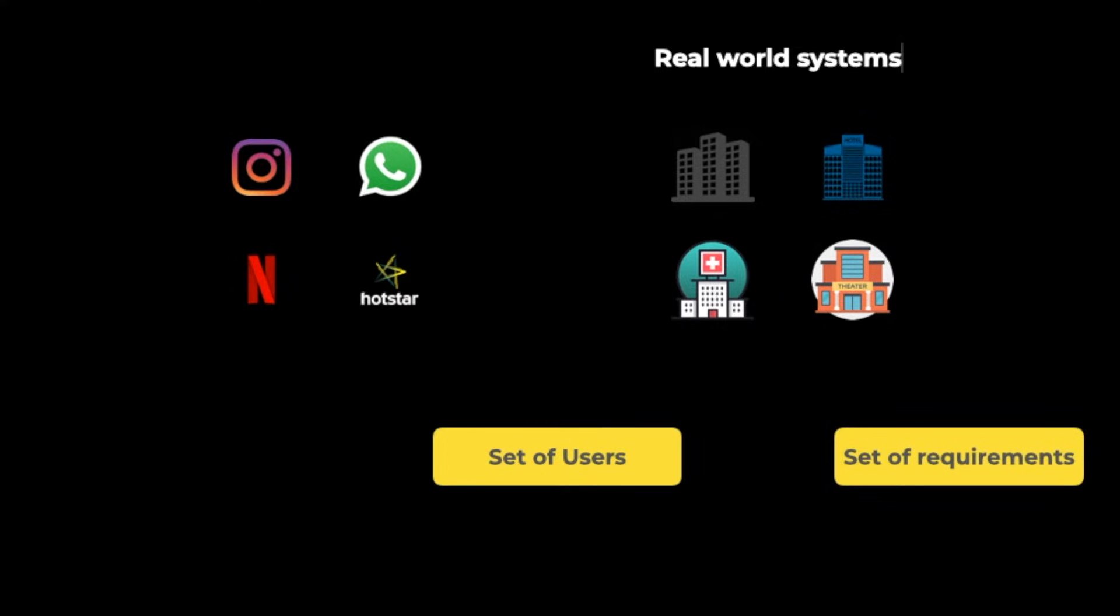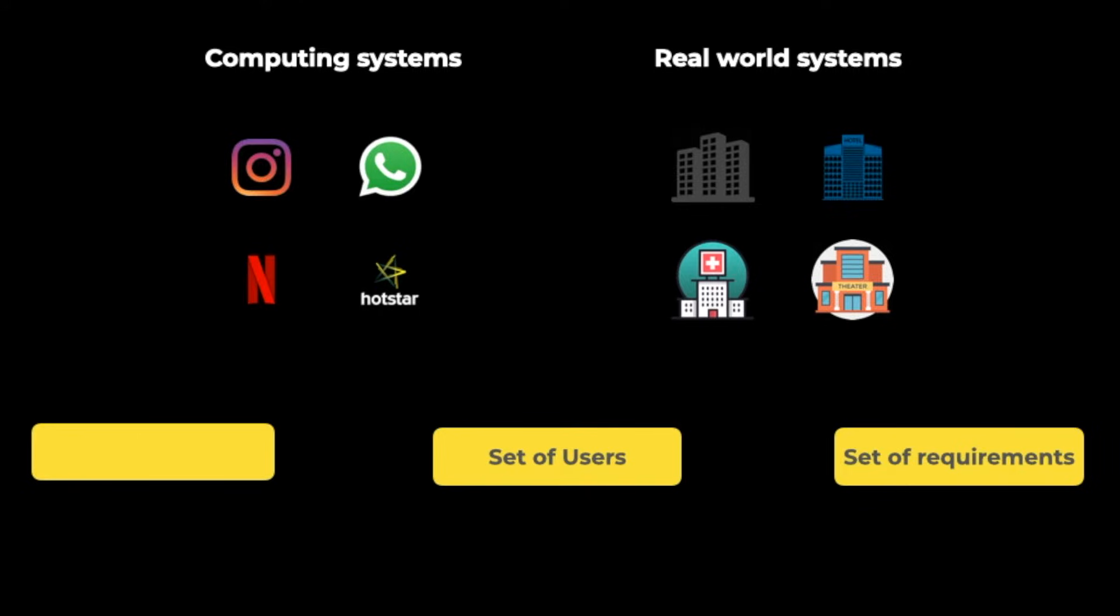All the systems, be it real world systems or be it computing systems, have certain things in common, like they are all built up of some components or modules which need to interact with each other and work together in order to fulfill the purpose of the system. For example, in buildings, all the buildings have walls, floors, ceilings, electrical supply, water supply.